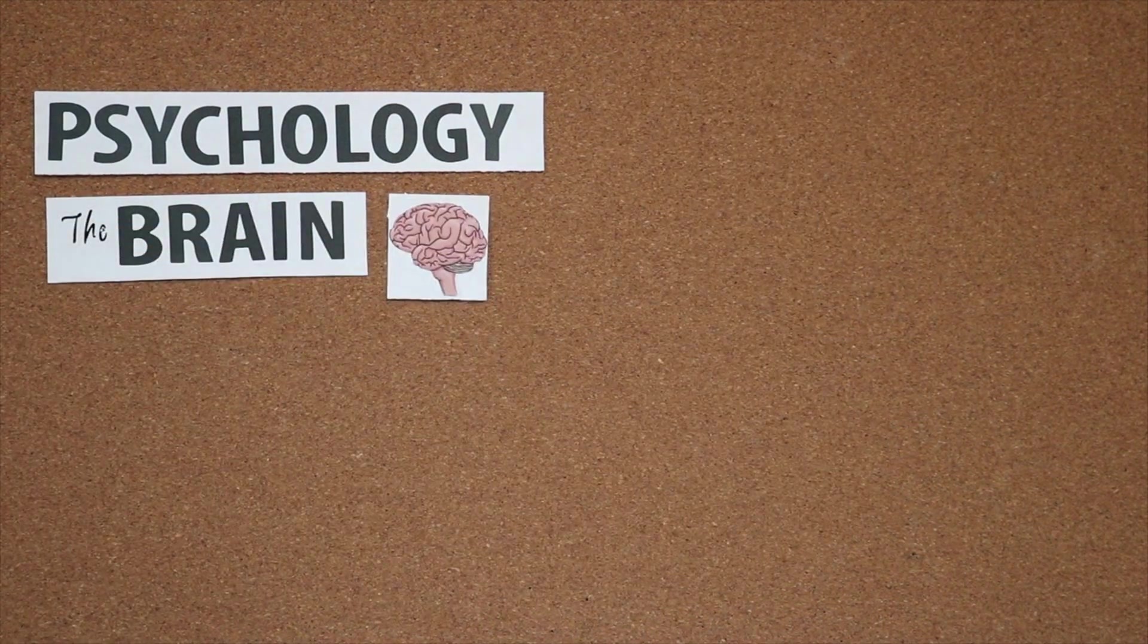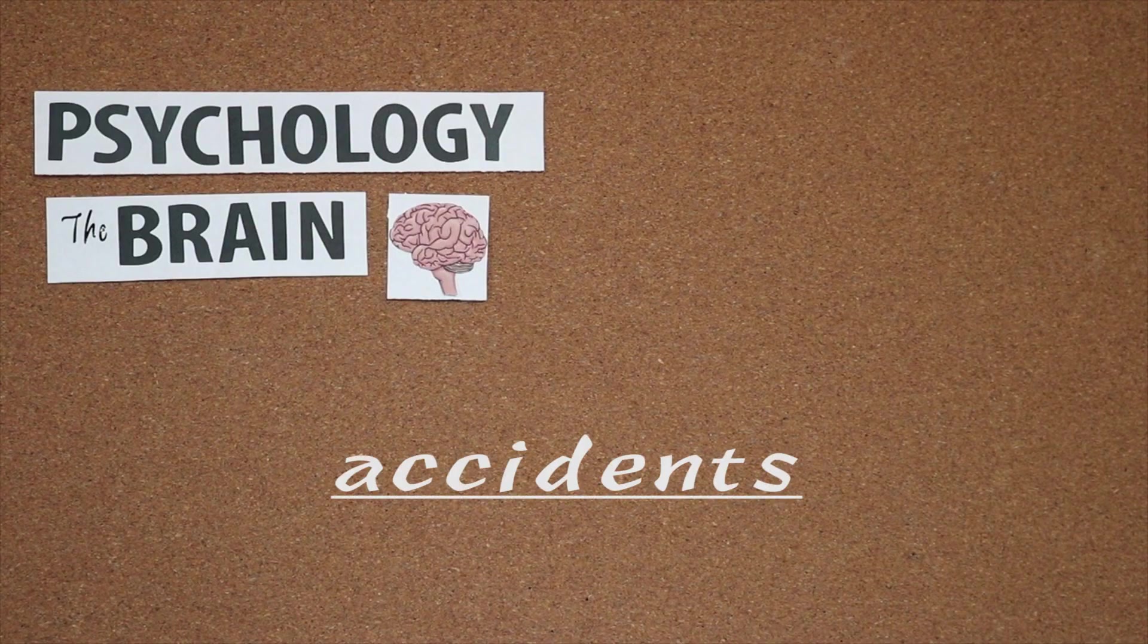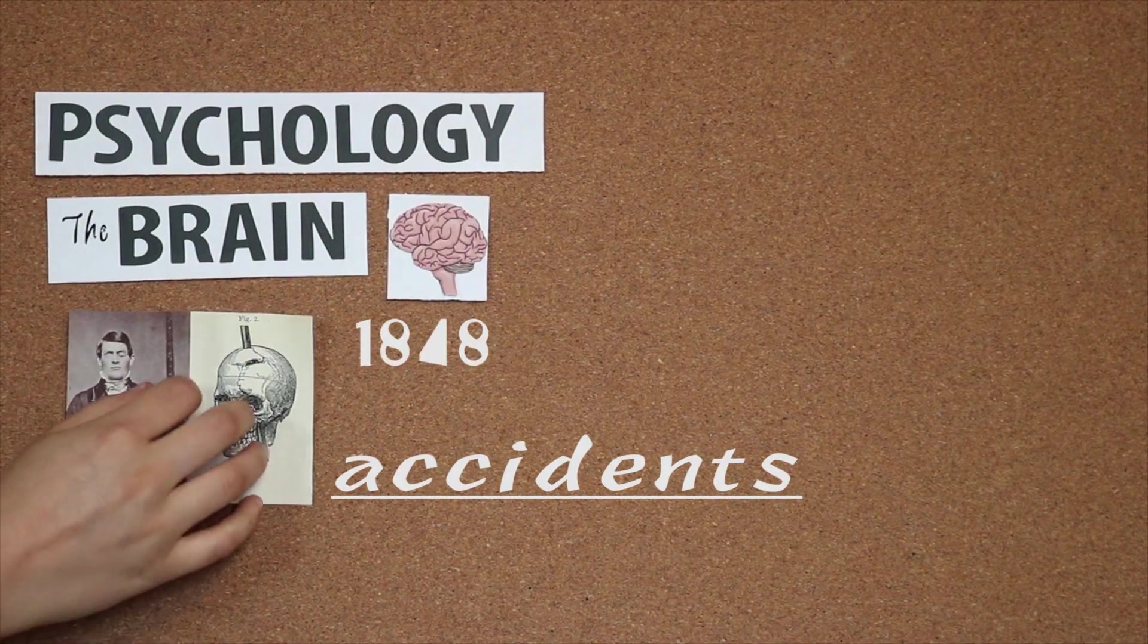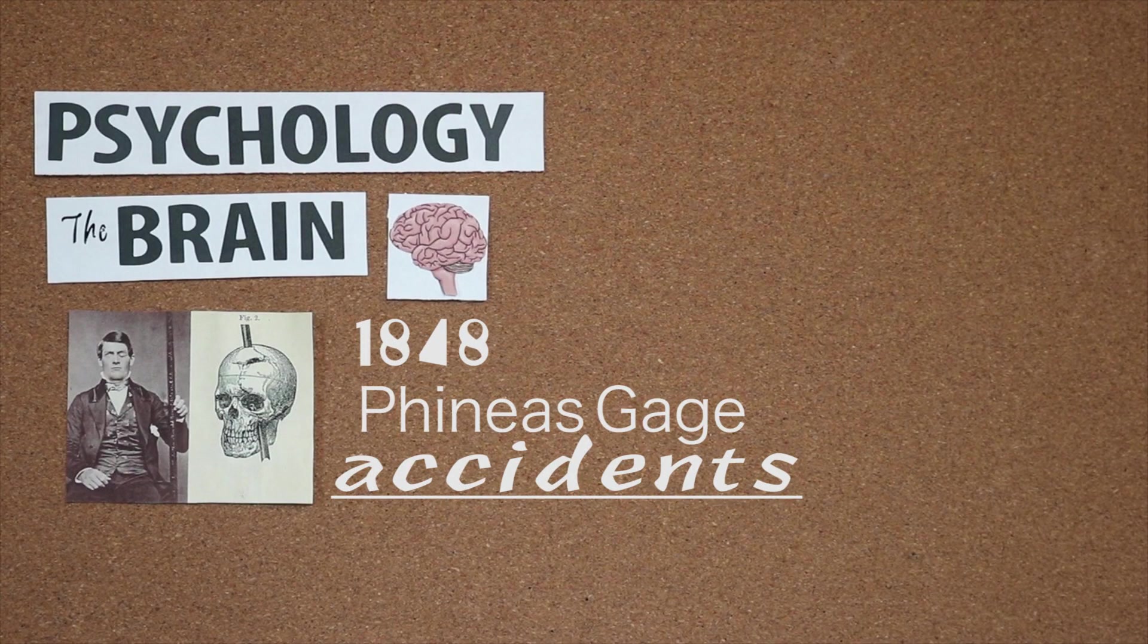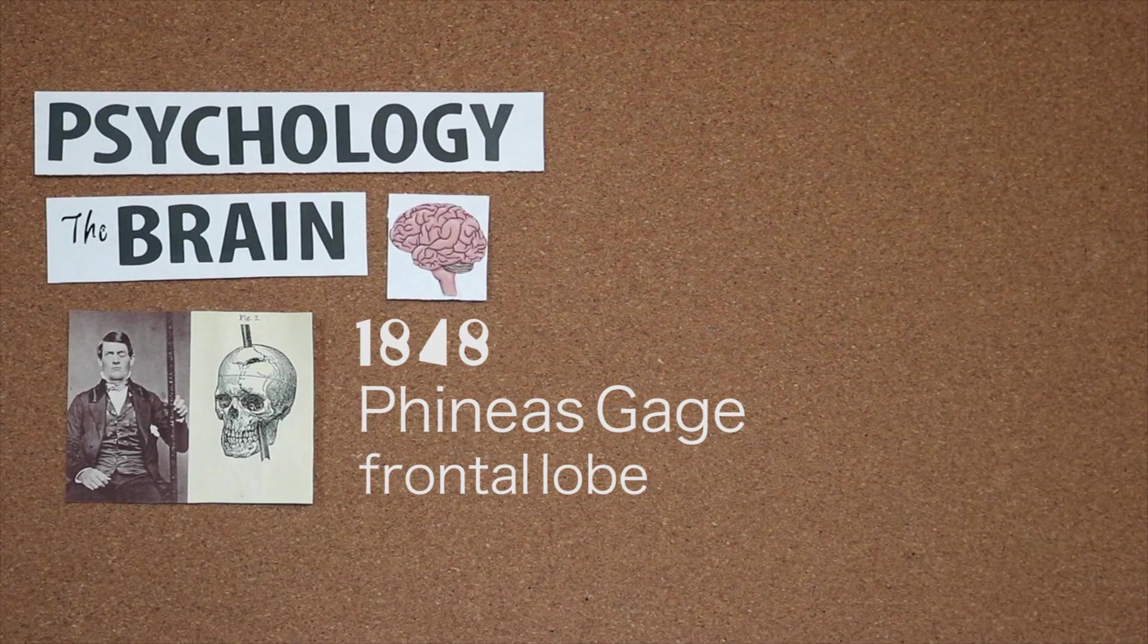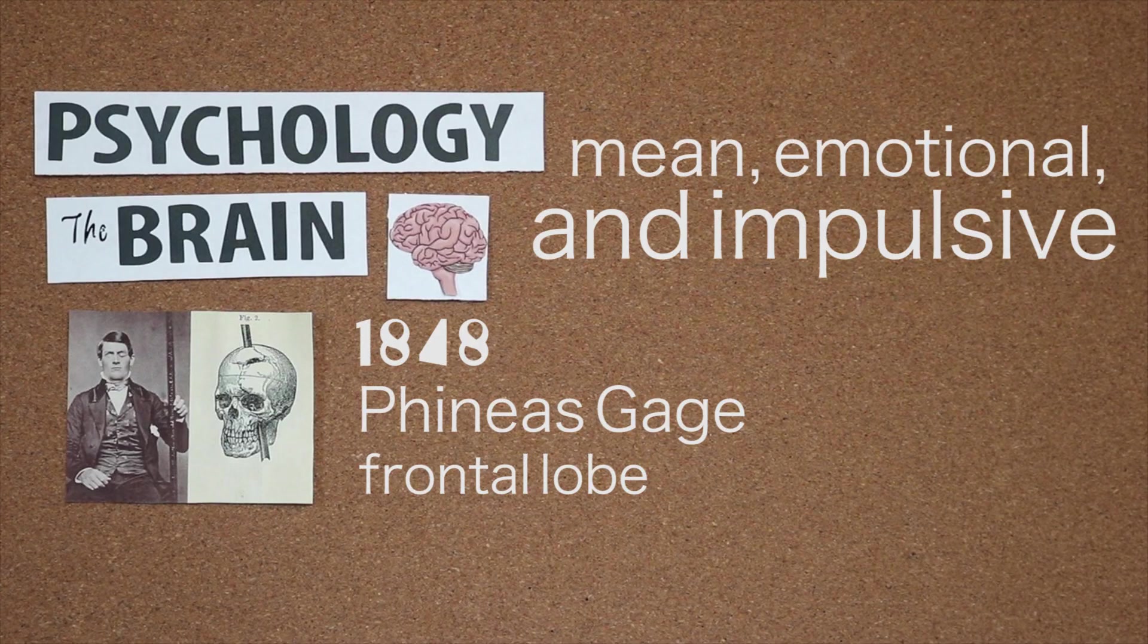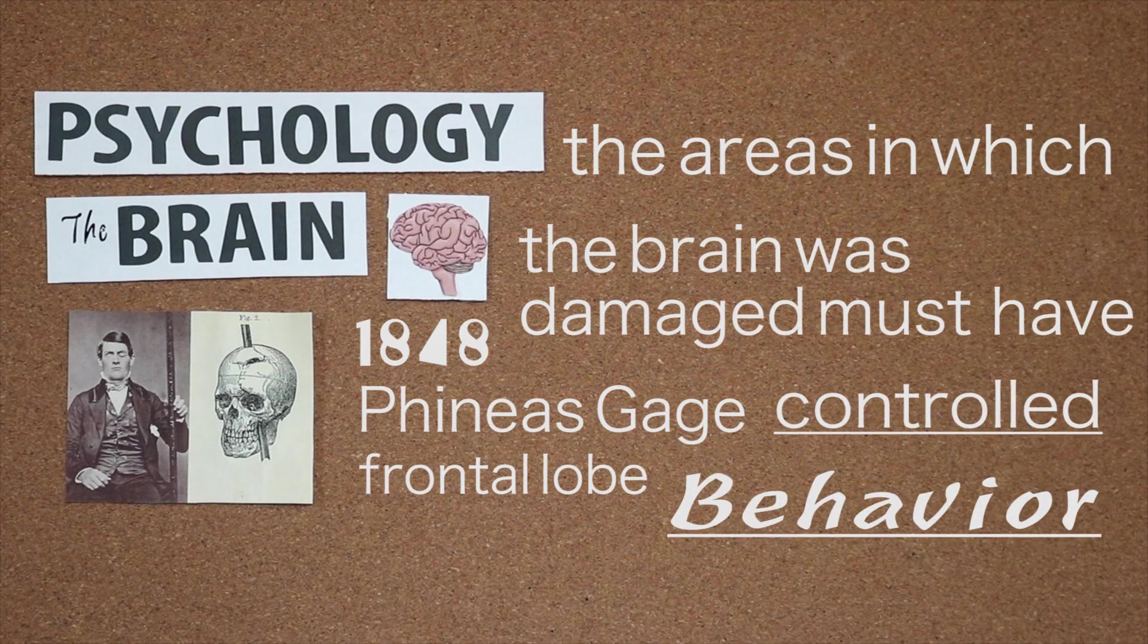Now back before we had this kind of technology, and even now, an important way in which we study the brain is through accidents. In 1848, a railroad worker named Phineas Gage was involved in a gunpowder accident that sent a metal rod through the front part of his skull. Though he miraculously survived and retained his ability to function completely as before, the brain damage to his frontal lobe somehow altered his entire personality. He was no longer himself, but rather mean, emotional and impulsive. And so researchers concluded that the areas in which the brain was damaged must have controlled behavior.